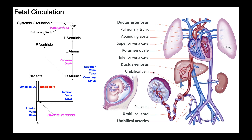First let's understand this structure right here — this is called the placenta. The placenta is an organ and it allows the mother to not only share her oxygenated and nutrient-rich blood with the developing fetus, but it also allows waste products from the fetus to be returned to the mother's circulation where they'll be recycled or gotten rid of.